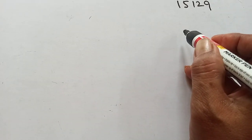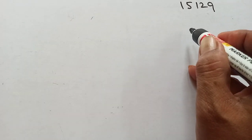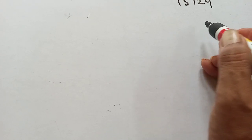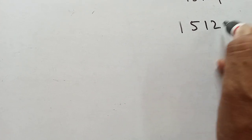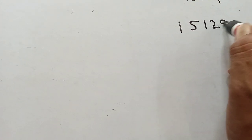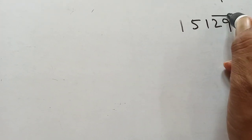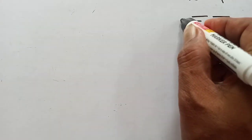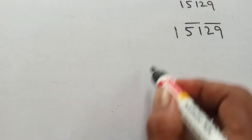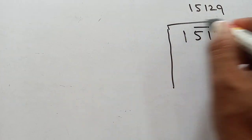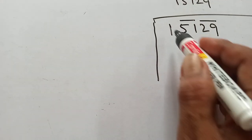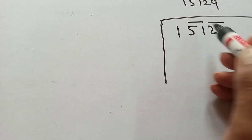First, make pairs from the right hand side. For 15129, making pairs from the right: one pair, two pairs — and you can see there is one unpaired digit at the left.